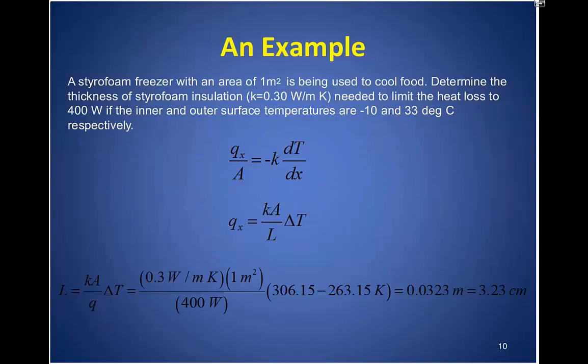Let's immediately do an example. If I've got a styrofoam freezer with an area of 1 m² being used to cool food and I want to know what thickness of styrofoam insulation I need to limit the heat loss to 400 watts if the inner and outer surface temperatures are -10 and 33 degrees Celsius respectively. This is a very nice example to illustrate Fourier's law and we have dT/dx that we translate into being ΔT or the change in temperature divided by the length that we want to solve for. We have the conductivity measurement and we have the area. And q in this case is going to be the heat loss that we're going to be able to tolerate in our system. Rearranging this equation, solving for L, we find out that our styrofoam insulation has got to be about 3.23 centimeters. One other note that I just want to make is that this styrofoam number for insulation, the k value is available in the literature. So like I mentioned a minute ago, many values for solids are available in the literature and they're easily looked up. So we need to have about 3.23 centimeters in order to maintain that 400 watts of heat loss.